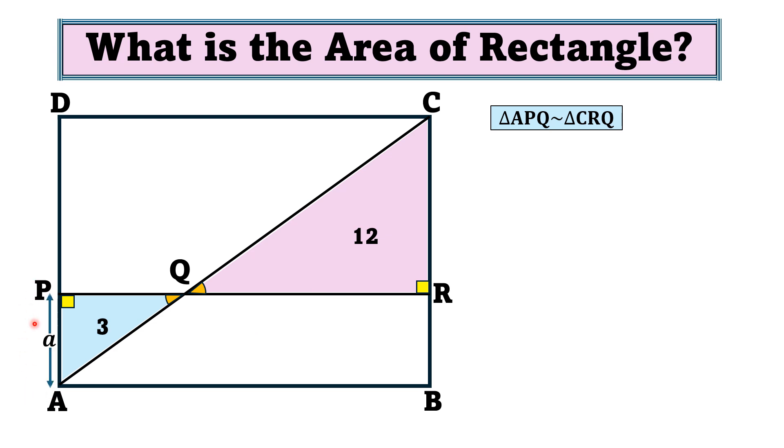then their sides must be in ratio 1:2. This means if we have this length AP as a, then the corresponding length of the other triangle, which is RC, must be 2a. And similarly, if the length PQ is b, then the corresponding length QR must be 2b.